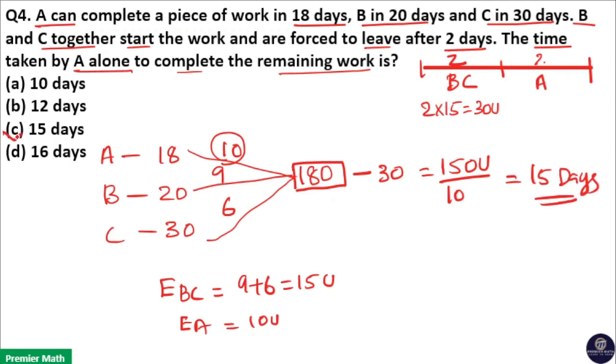So option C is your answer. The remaining work is 180 minus 30 which is equal to 150 units, and time taken by A to complete the remaining work is 150 by 10, which is 15 days.